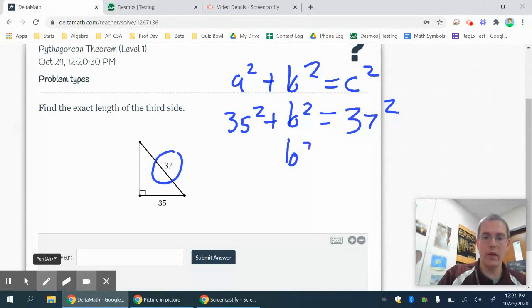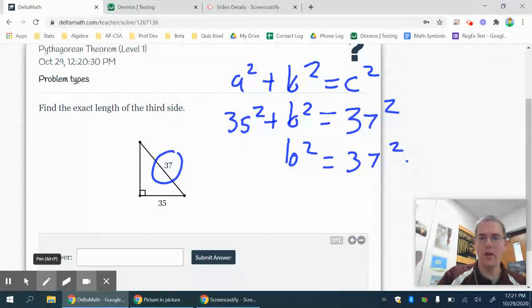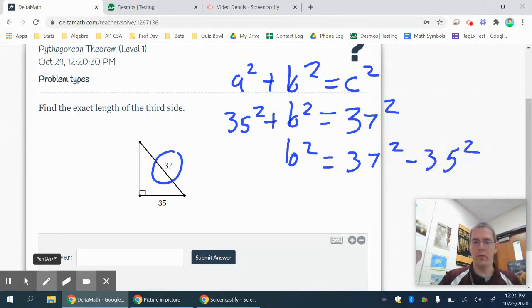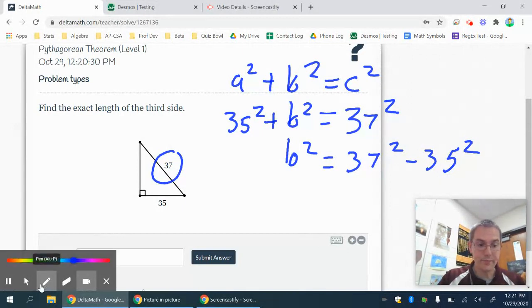So I'm going to get B squared. I would need to subtract 35 squared from both sides. And generally, I do not multiply those out. I just do something like that. Now, at this point, you're free to pull up Desmos,